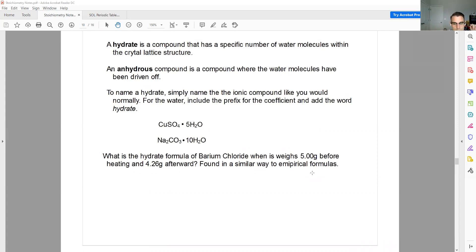To name a hydrate, you simply name the ionic compound that you would normally. Okay, so for example, CuSO4, we should know is copper 2 sulfate. Na2CO3 is sodium carbonate. Then for the water, what we do is we just include the prefix and add the word hydrate. So there are going to be five H2Os. So that would be penta, that's five, and then you just add the word hydrate. So it's copper 2 sulfate, pentahydrate, sodium carbonate, decahydrate. Okay, and then the last problem for this set of notes.